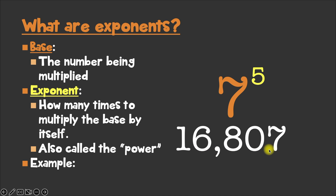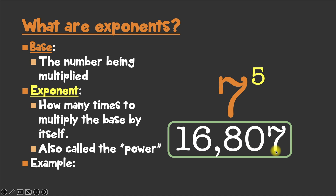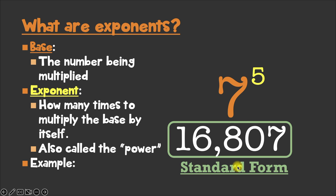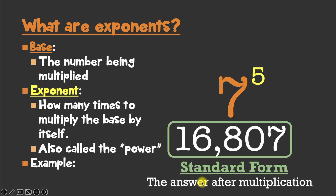16,807! That is a huge number! And that is what 7 to the 5th power is when you have it in standard form. And remember, standard form is just the answer after you finish multiplying everything out. So after we finish multiplying 7 times 7 times 7 times 7 times 7, our final answer in standard form is 16,807.